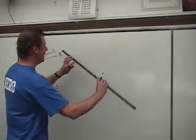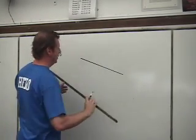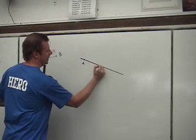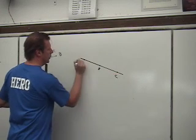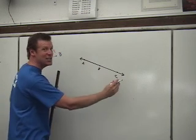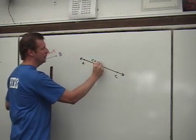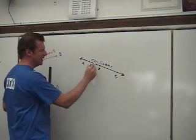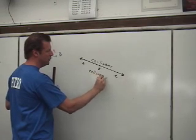Now, if we have more than one point on a line—A, B, and C—we can say that these points, since they share the same line, are collinear. The way it's spelled in geometry is collinear with two L's.